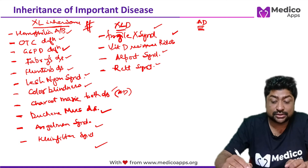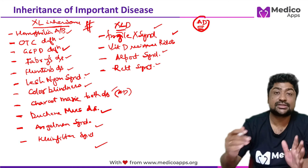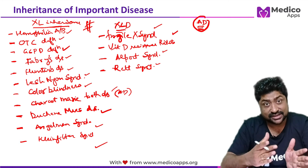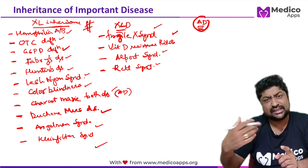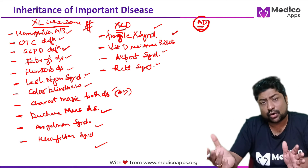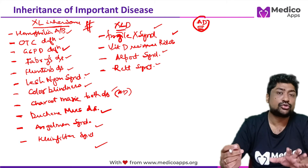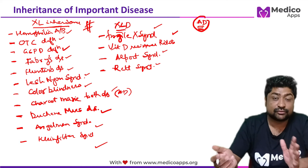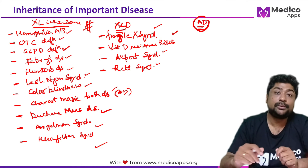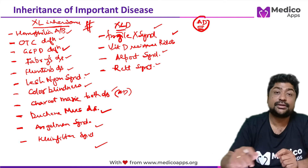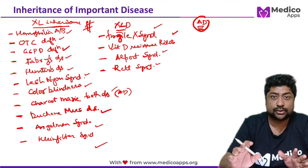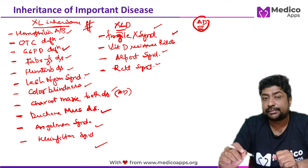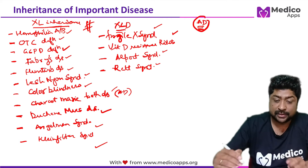Now let's look at autosomal dominant disorders. The reason I'm giving you this list is so that on one hand you have X-linked and autosomal dominant, and anything not in either list you can presume as autosomal recessive. If you can learn the entire list, well and good, but this will help you solve most examination questions, as I've tried to include all diseases asked in previous exams.